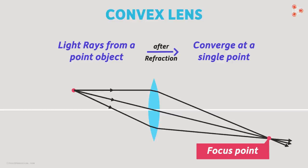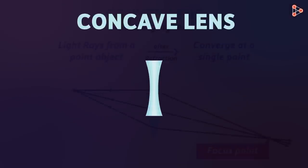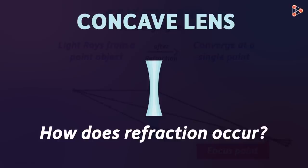Since the convex lens converges all the light rays at a single point, we also call it a converging lens. And what about a concave lens? How do they refract light rays? We will see that in the next lesson.